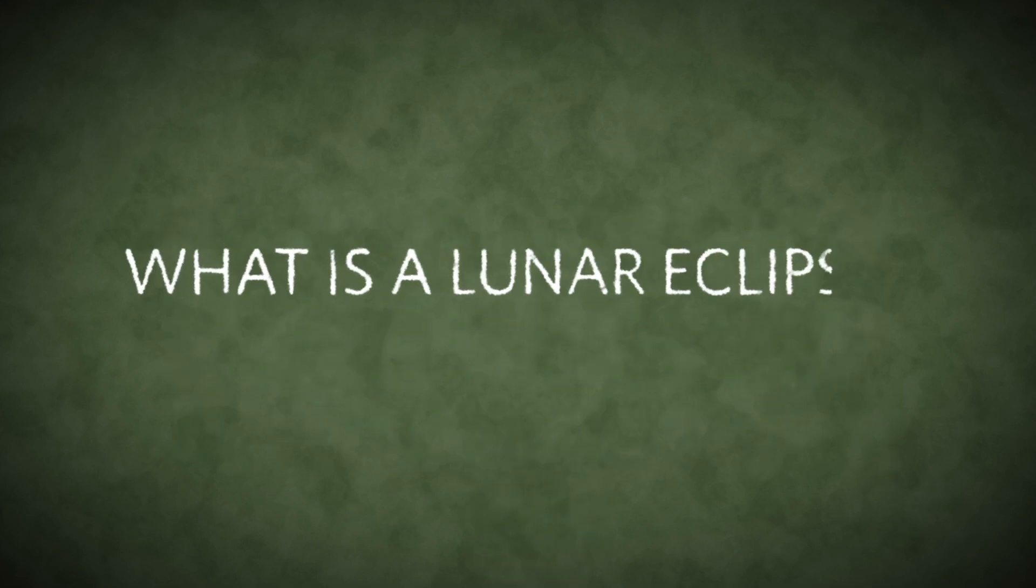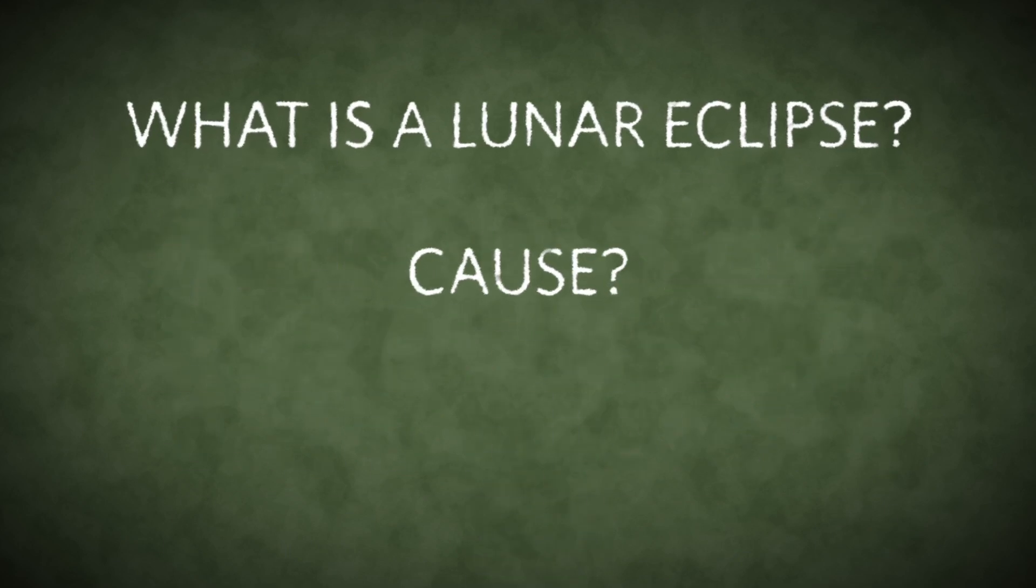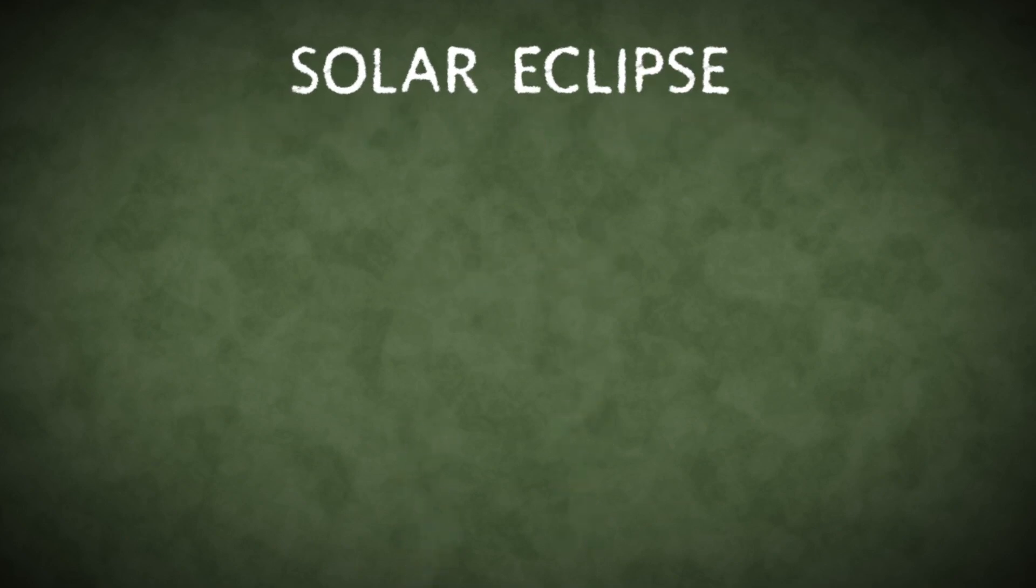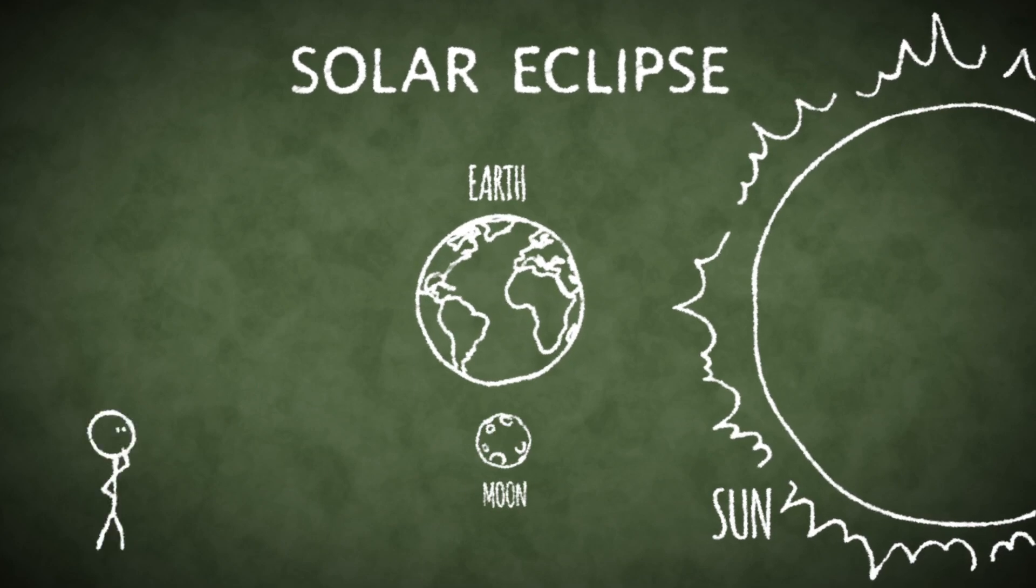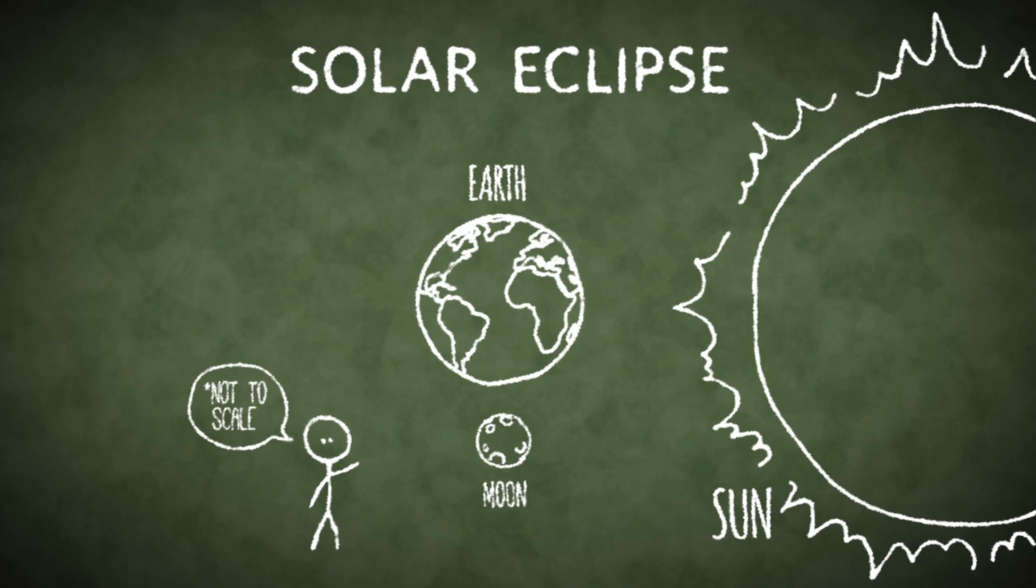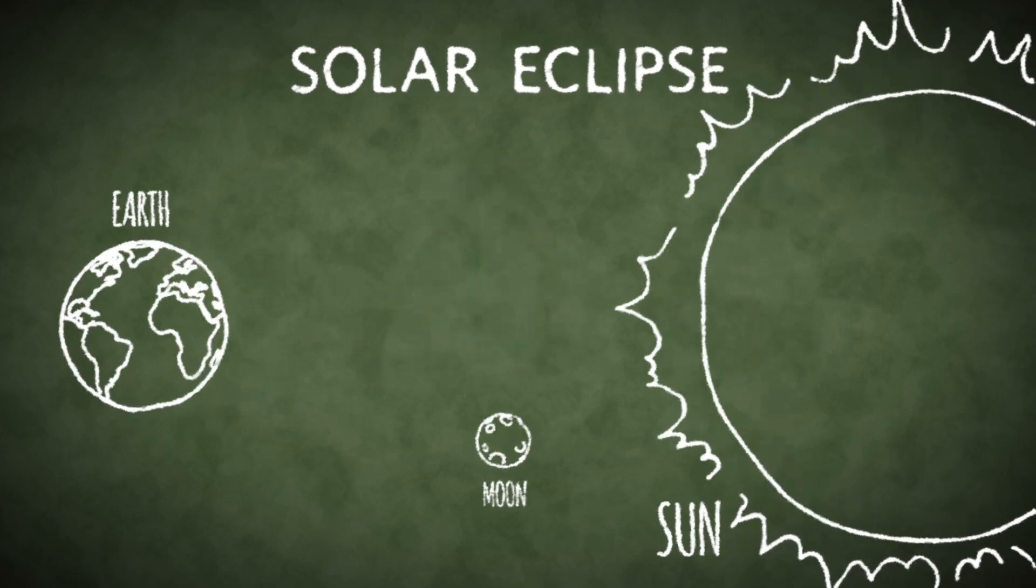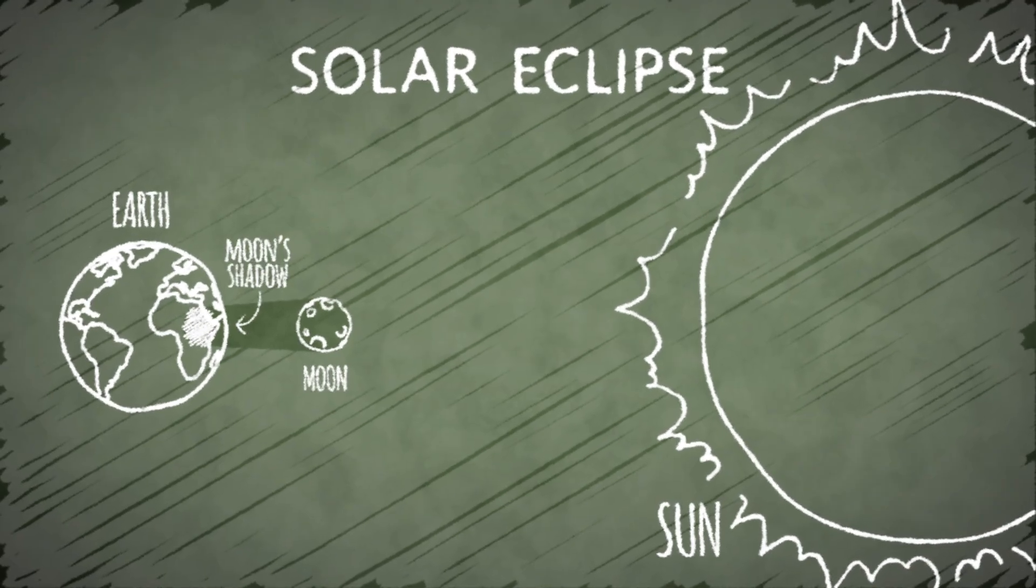What is a lunar eclipse, what causes it, and how can you safely observe one? Like a solar eclipse, a lunar eclipse is caused by a perfect alignment of Earth, the Sun, and the moon. However, a solar eclipse only occurs when the Sun and Earth are on opposite sides of the moon, with the Sun casting the moon's shadow onto Earth.